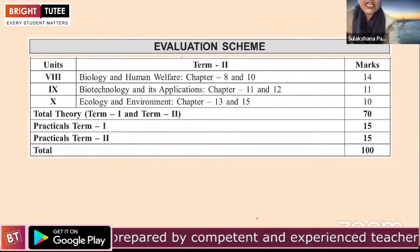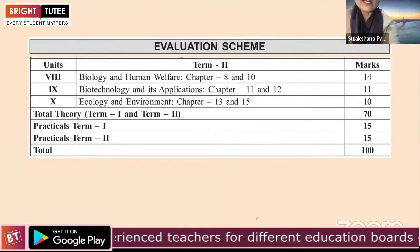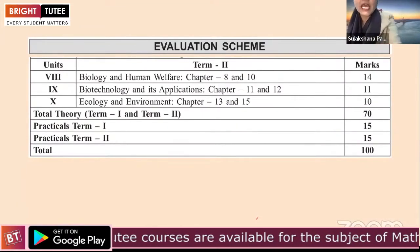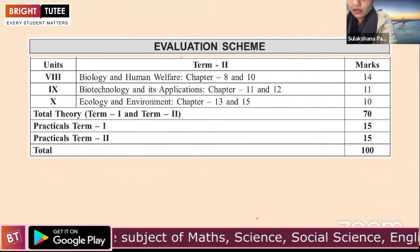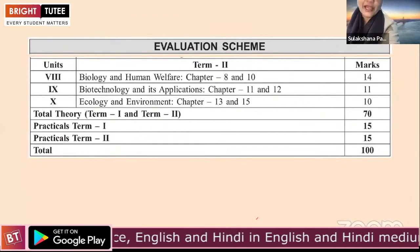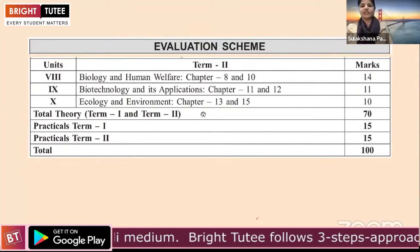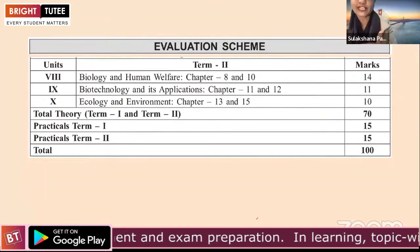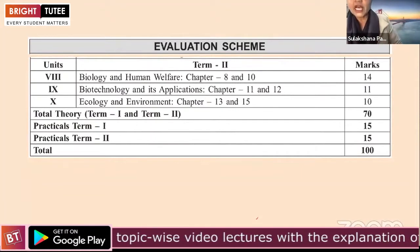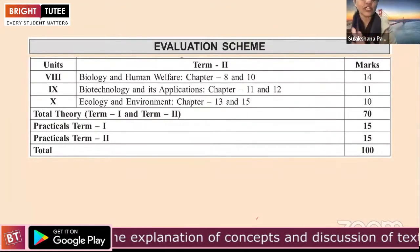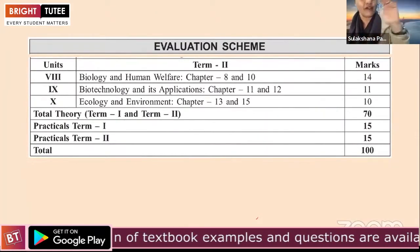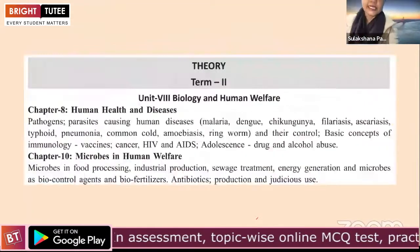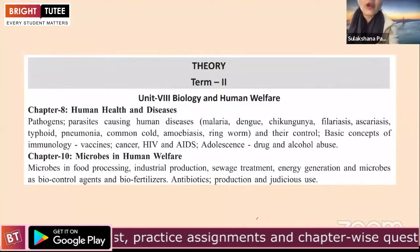Regarding the evaluation scheme: Chapter 8 is Human Health and Disease, Chapter 10 is Microbes in Human Welfare. Unit 9 covers Biotechnology and its Application, which includes Chapters 11 and 12 carrying 11 marks. Ecology and Environment is Unit 10, covering Chapters 13 and 15 — Chapters 14 and 16 are deleted. The total theory marks for Term 1 and Term 2 together is 70 marks, and practical marks are 15 marks each term. Unit 8 carries 14 marks.